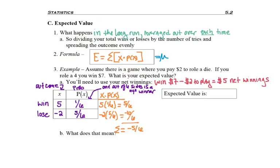When it comes to expected value, we always want to talk in terms of money. So I need to convert that to a decimal to say that my expected value is negative 83 cents. Keep in mind, if you use the cent symbol, it goes on the right side and you do not use a decimal. In both cases, our expected value is negative. Pretty much with most games, it's going to be negative.